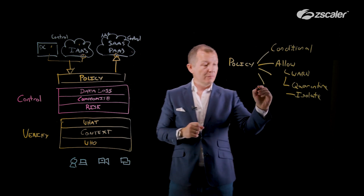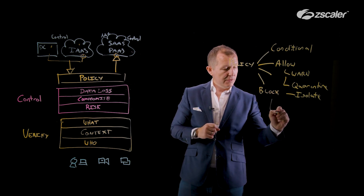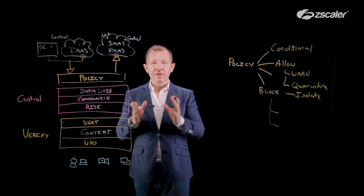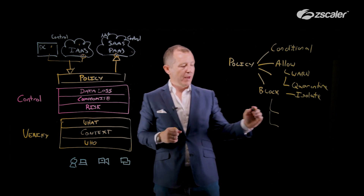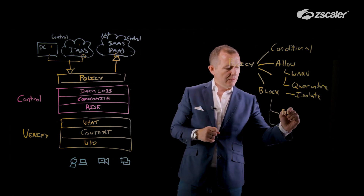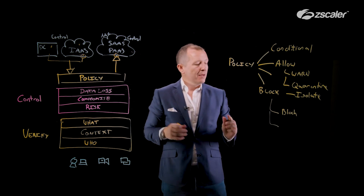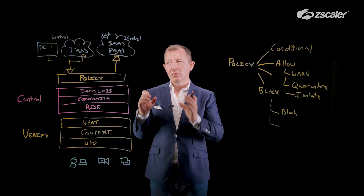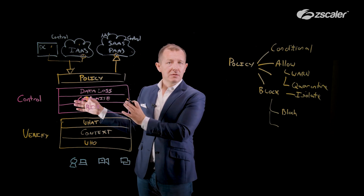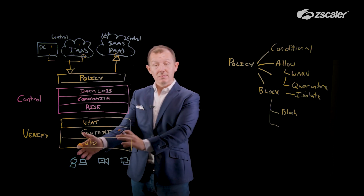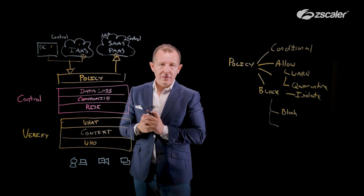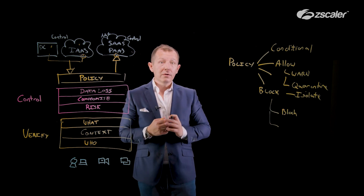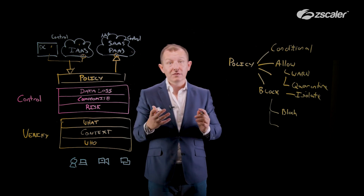Conversely, we also have block — and you can think of a straight block like a good old-fashioned network termination. But we should also think about block in terms of block-and-quarantine, not just allow-and-quarantine. Maybe I want to send malicious traffic requested by a perhaps-infected user into an environment that is not allowed access but is quarantined. Or another option is to send it off to the deception engine.